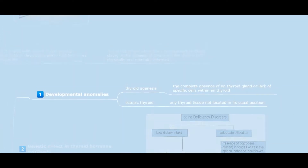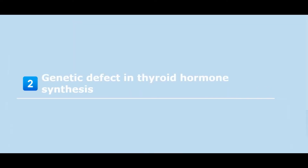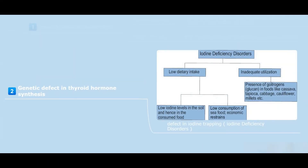Pathogenesis: developmental anomalies like thyroid agenesis — the complete absence of the thyroid gland — or lack of specific cells within the thyroid, or ectopic thyroid, meaning thyroid tissue not located in its usual position. Also, genetic defects in thyroid hormone synthesis, e.g., defect in iodine trapping, or iodine deficiency disorders due to low dietary intake or inadequate utilization.